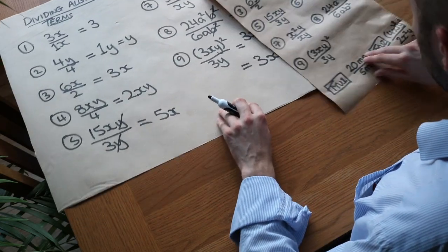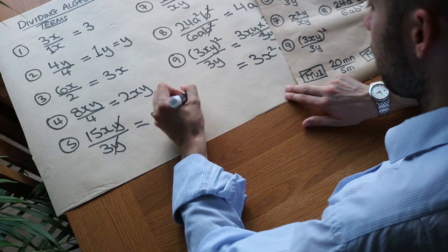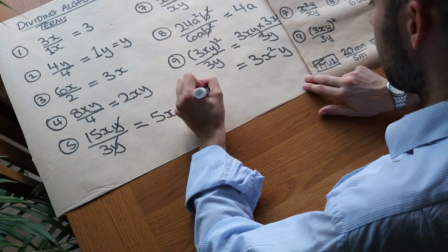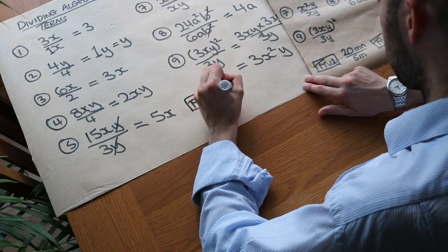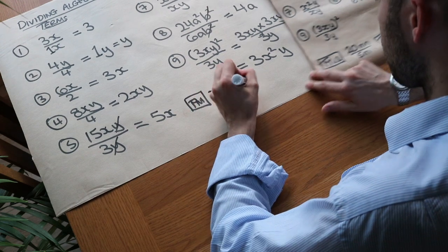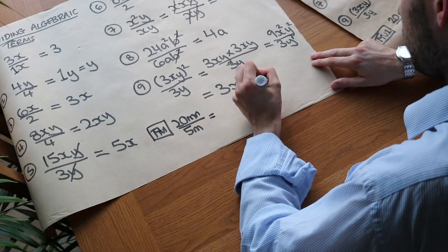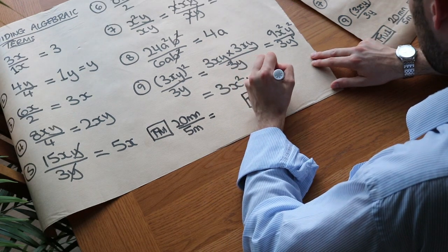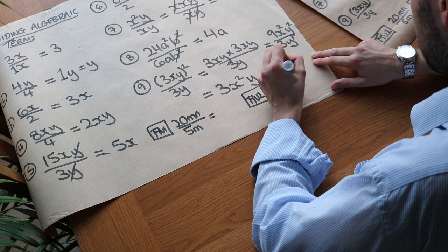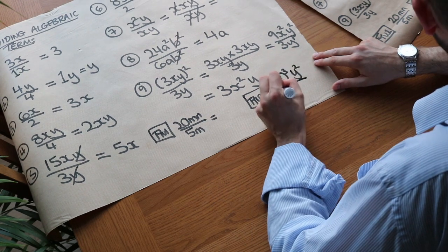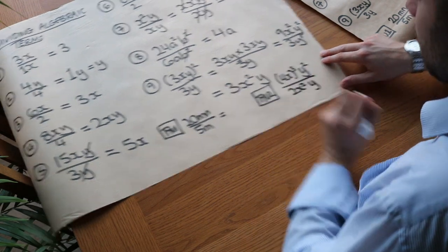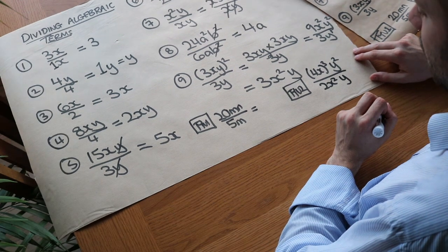And then I want you to do these two test your understanding questions here. So we've got this first one, which is 20mn divided by 5m. And then this second one, which is harder, is we've got 4x cubed times y squared over 2x squared y. So you may want to pause the video at this point to have a go at those.